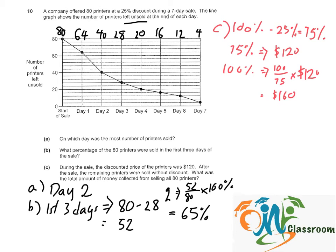So let's come back to the question. After the sale, the remaining printers were sold without discount. What was the total amount of money collected from selling all 80 printers? So we know that in this sale, 80 minus 4, which is 76 printers, they are sold at 25% discount, which is $120.